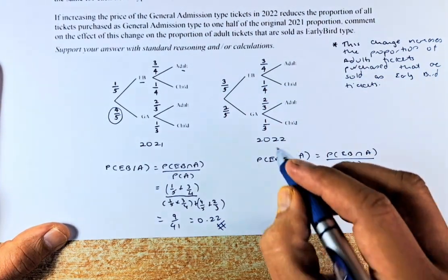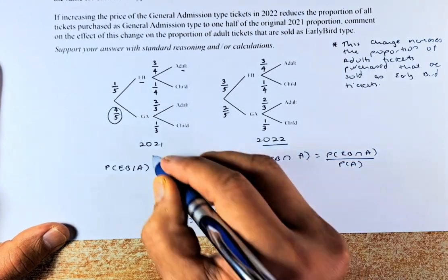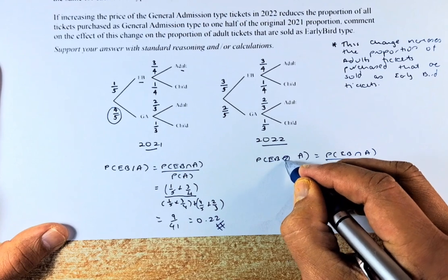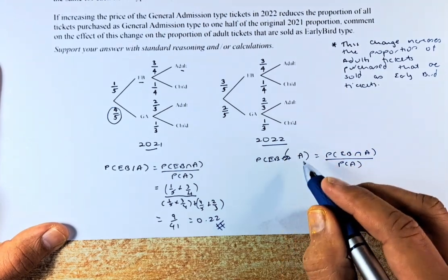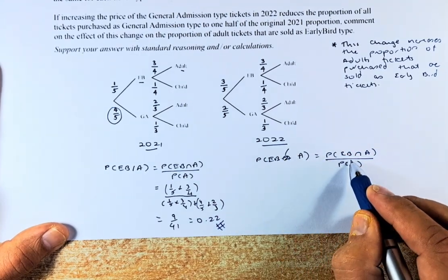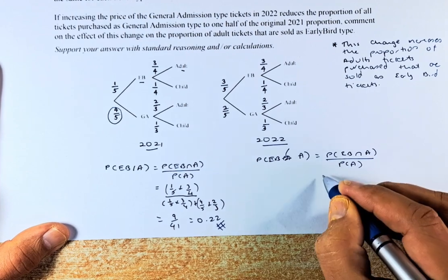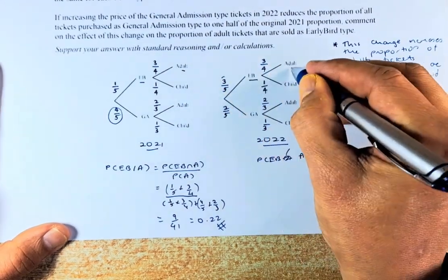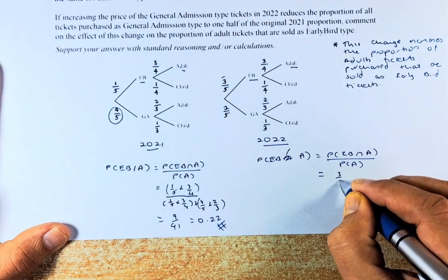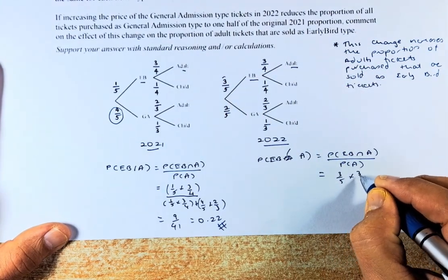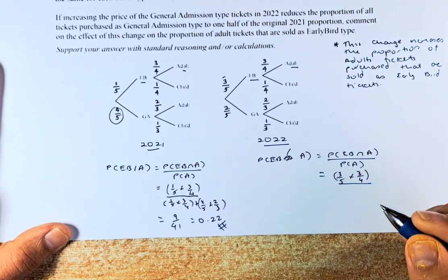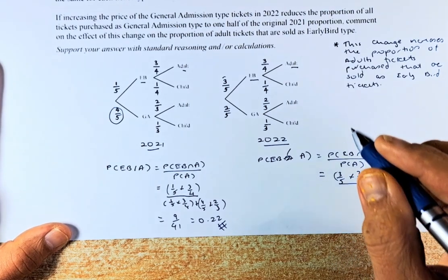Now we are going to do the same thing. This time we are going to calculate 2022 instead of 2021. So the same probability of early bird given adult is going to be early bird and adult divided by adult. So we are going to do the same thing. Early bird and adult is going to be three-fifths multiplied by three-quarters.